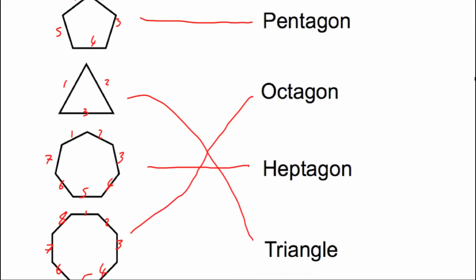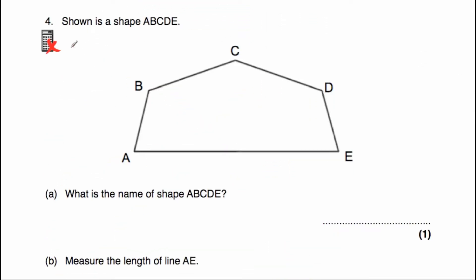Question number four, part A: showing shape A, B, C, D, E. The shape has one, two, three, four, five straight sides, so it is a pentagon. Pentagon because it's got five straight sides.